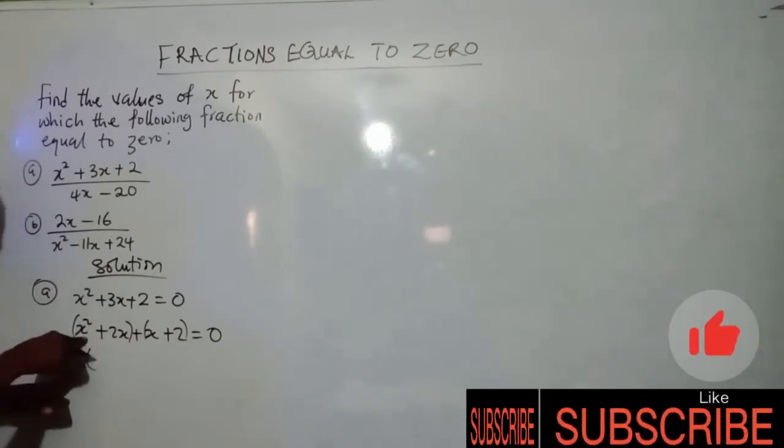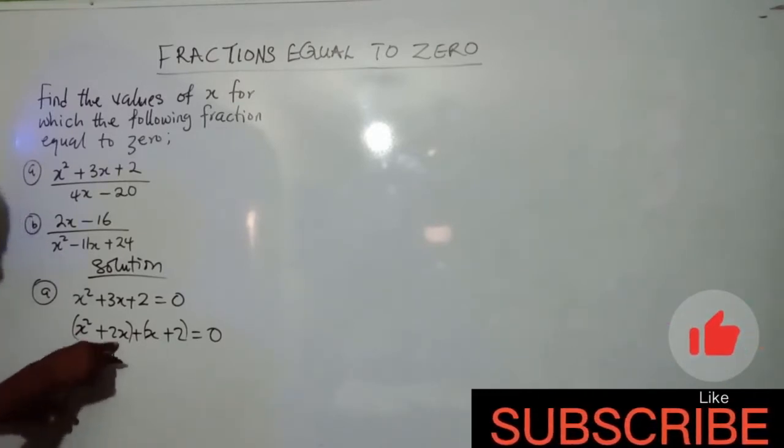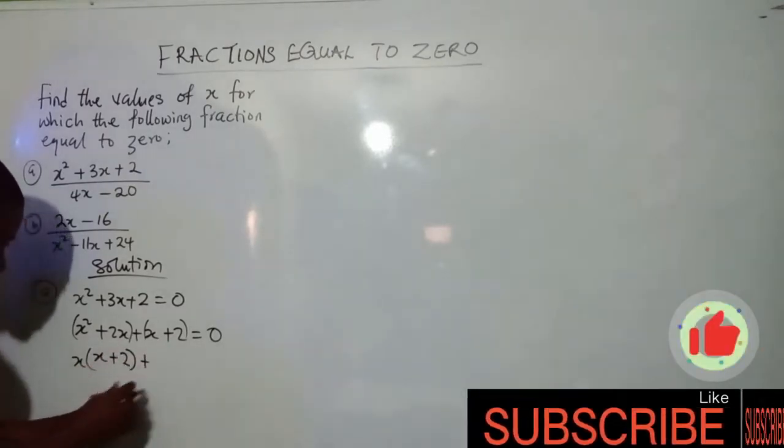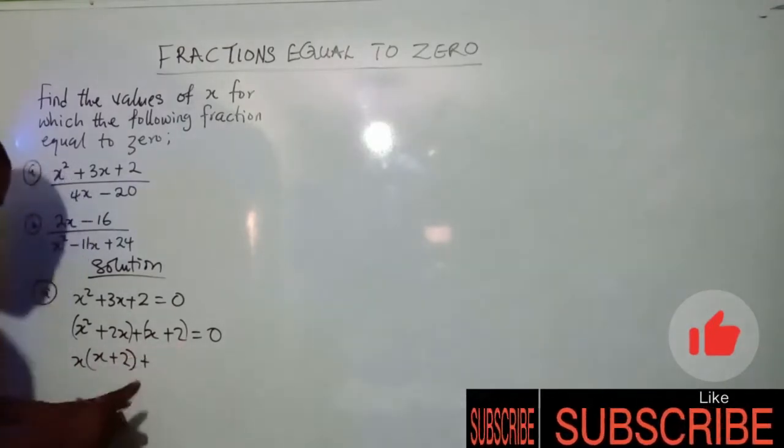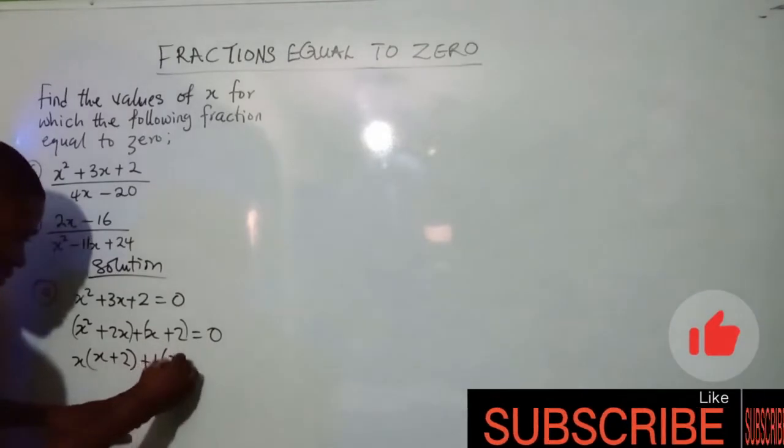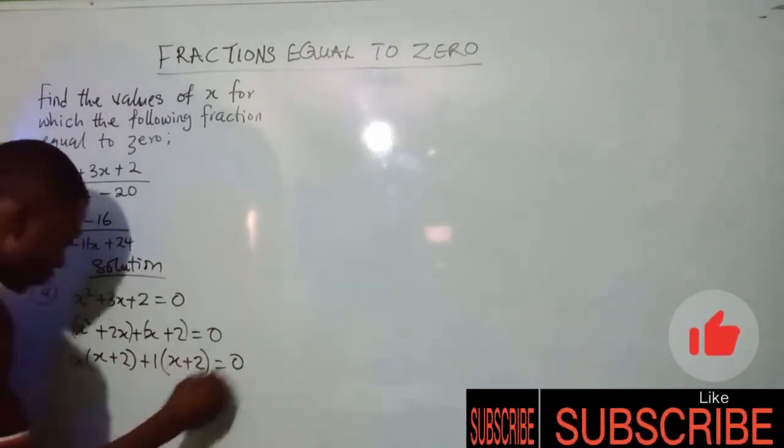What would I multiply by x to give me x²? It's x. What would I multiply by x to give me 2x? It's 2. Looking at this again, x and 2, what do they have in common? Just 1. So 1 times x gives me x, 1 times 2 gives me 2, equals 0.